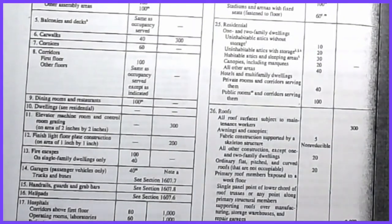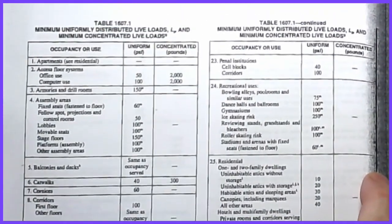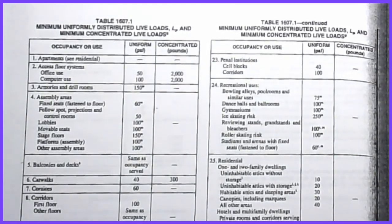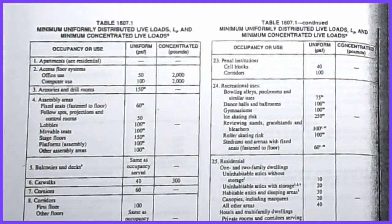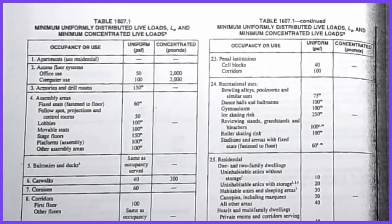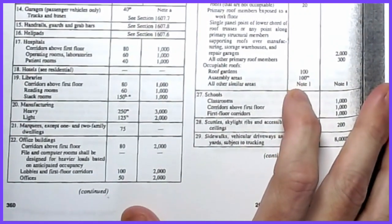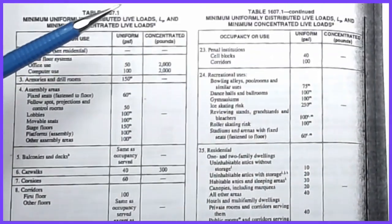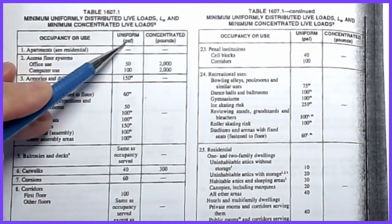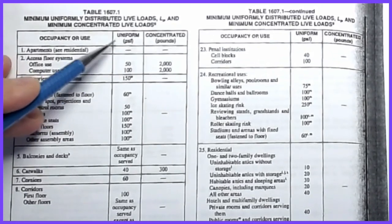The table I'm showing here is IBC Table 1607.1, which covers live loads. There are two categories for each occupancy type: the uniform load in psf — that area load we discussed last video — and also a requirement to account for a single concentrated point load that can be placed at any location in the structure.